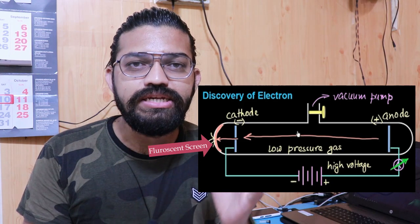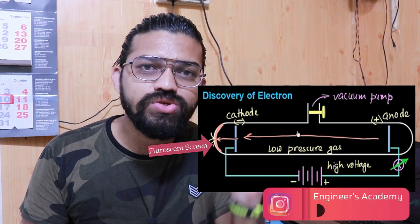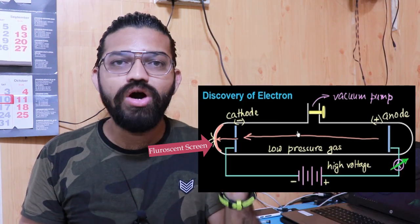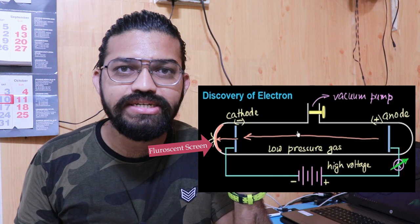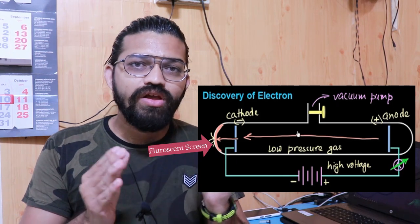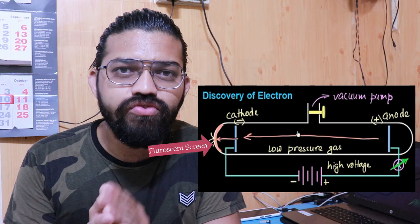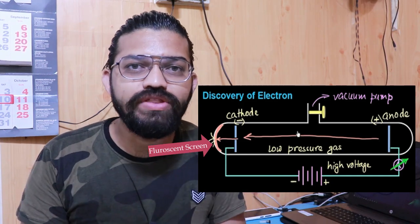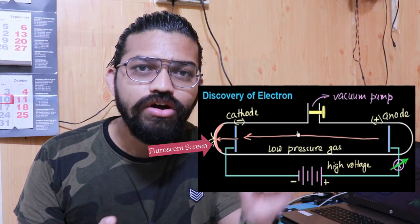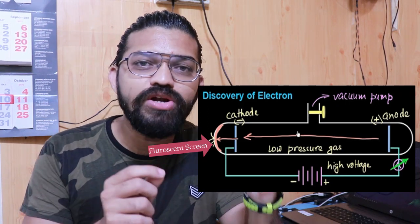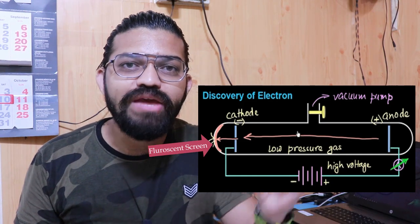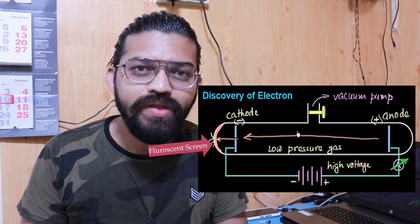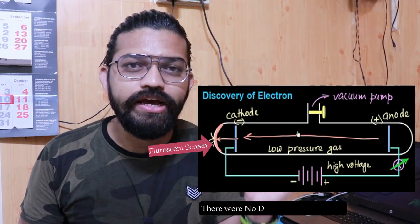The fluorescent material is essentially a phosphorous screen, and this fluorescence screen detects light. When he connected the two electrodes to the battery, if there was any kind of flow from anode to cathode, the fluorescence screen would be able to detect that flow and emit light. But in that particular stage one, there were no detections on the fluorescence screen.